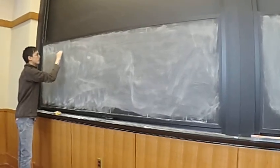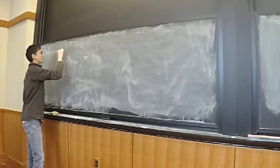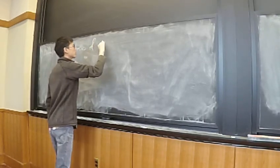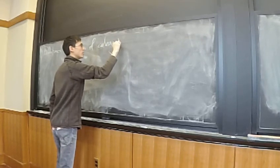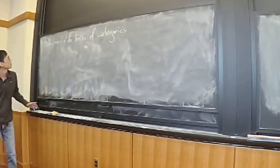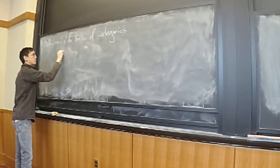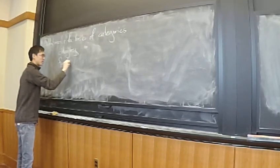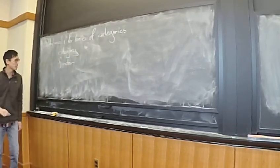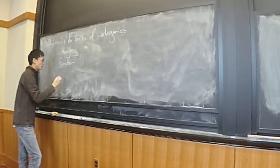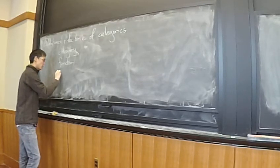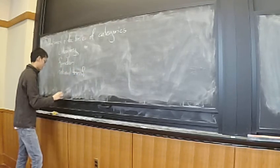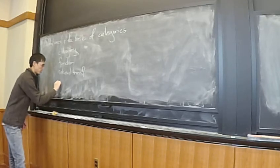So, databases and the basics of category theory. The topic will be understanding this table. On one hand, I want to tell you what a category is, what the maps of categories are — those are known as functors. We'll talk about natural transformations very briefly, and talk about universal constructions.